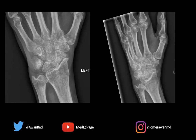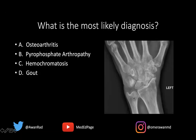We have two views of the left wrist here, and there are definitely important findings. The question is: what is the most likely diagnosis? Is this a case of osteoarthritis, pyrophosphate arthropathy, hemochromatosis, or gout?